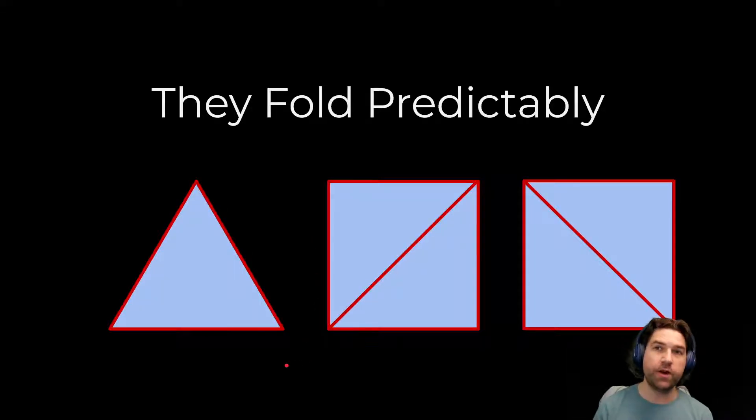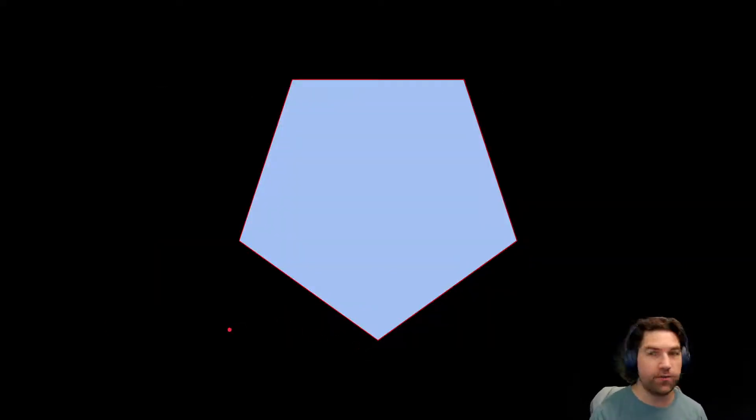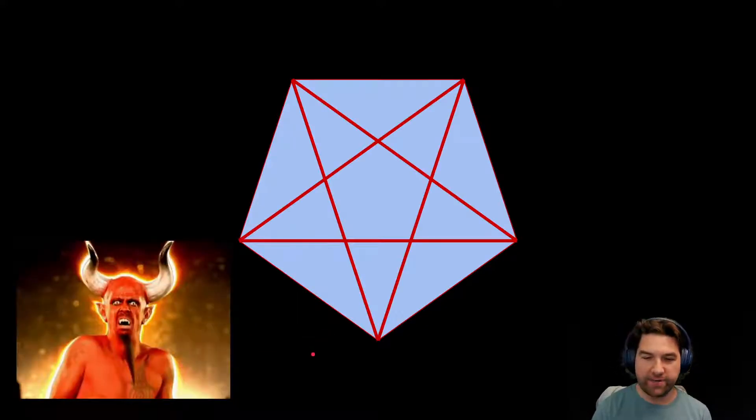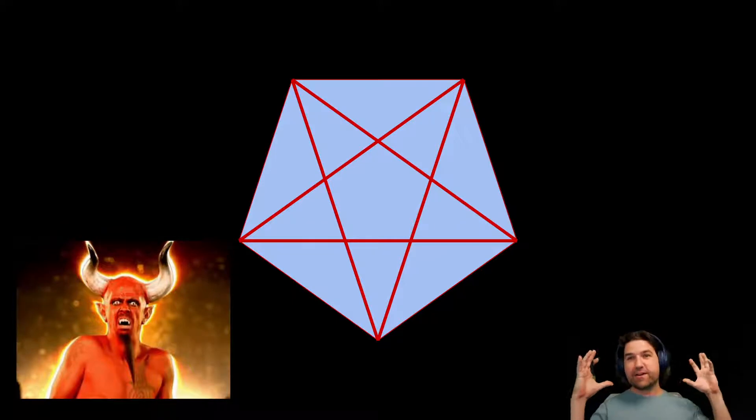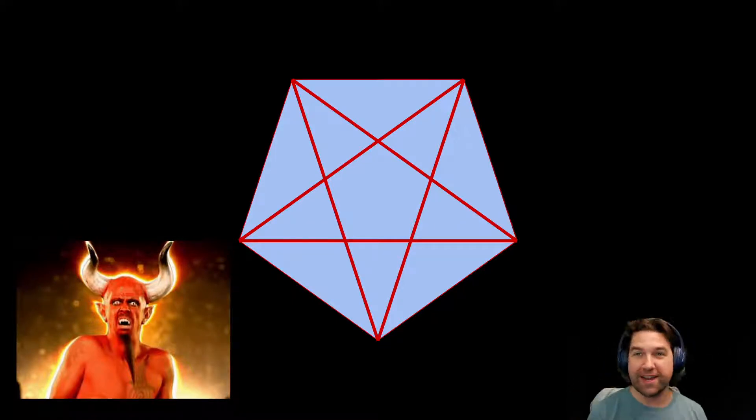They also fold predictably. A triangle doesn't fold at all, but a good quad will either fold in this direction or that direction, and that's it. It can never fold in on itself by accident. However, if you look at an N-gon, the horrible pentagram of death, it could fold in any number of ways and create something really, really awful. When you think about the N-gon, think about some sort of horrific satanic pentagram of doom, because that's what it does for your models.